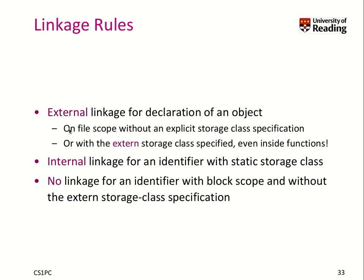There are three linkage rules. External linkage applies to everything placed at file scope that has no explicit storage class specified, and even if you use the external modifier on a variable inside a function. Internal linkage applies to any identifier with the static storage class, whether it's a function or object. No linkage applies to any identifier with block scope — basically local variables, but only those where you don't specify external storage class.